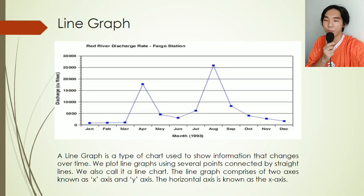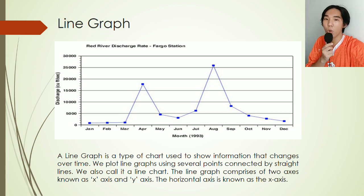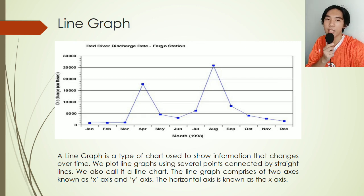First, we have Line Graph. A line graph is the type of chart used to show information that changes over time. We plot line graphs using several points connected by straight lines. We also call it a line chart. The line graph comprises of two axes known as the x-axis and y-axis. The horizontal axis is known as the x-axis, and the y-axis is known as the vertical axis.